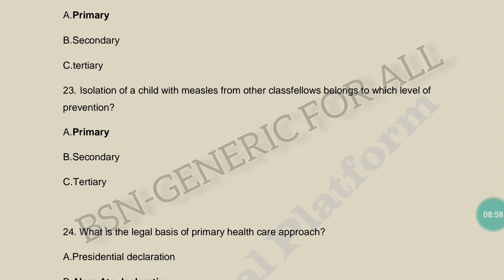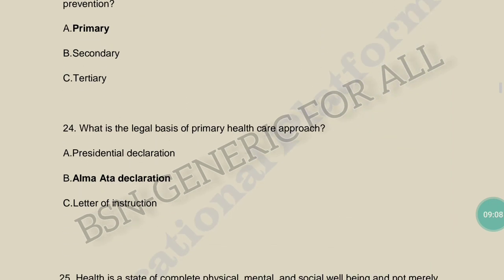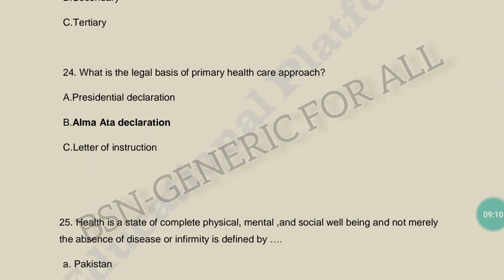Isolation of a child with measles from other classmates — which level of prevention does this belong to? This is primary prevention — isolating the infected child prevents spread to others.